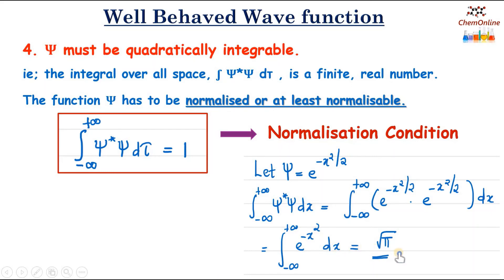Here the value is not equal to 1, but it equals a finite real number. We can normalize this by a method, so we can consider ψ as an acceptable function.